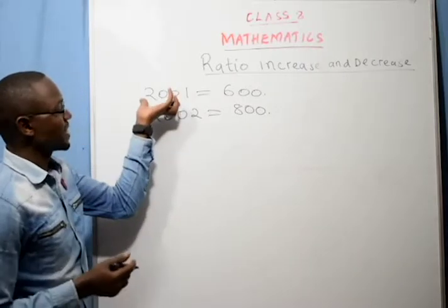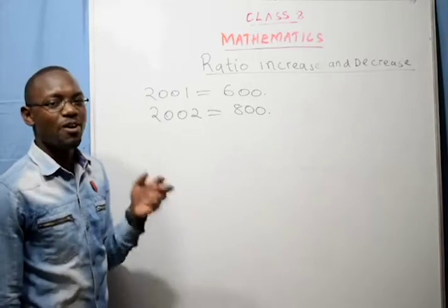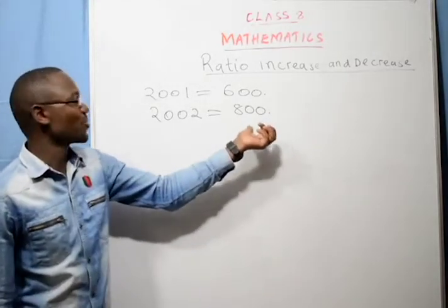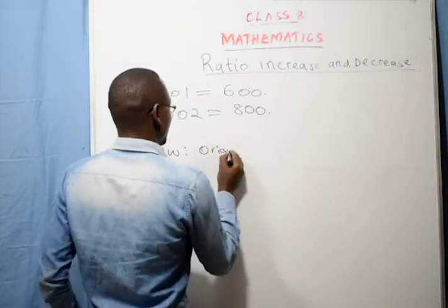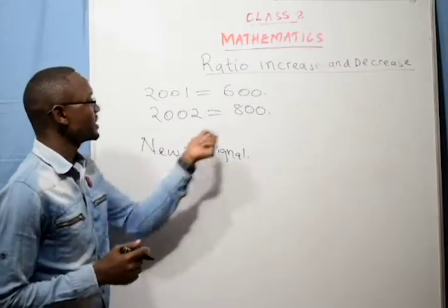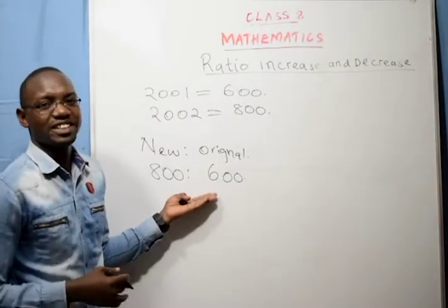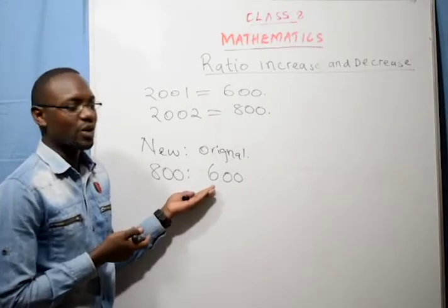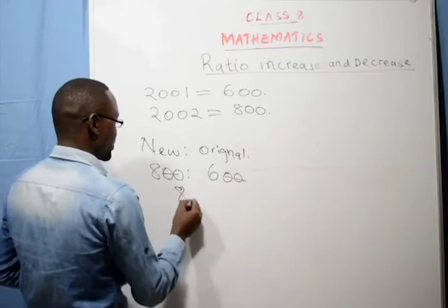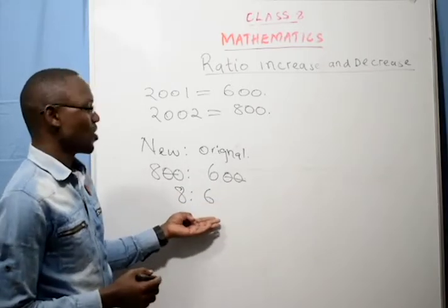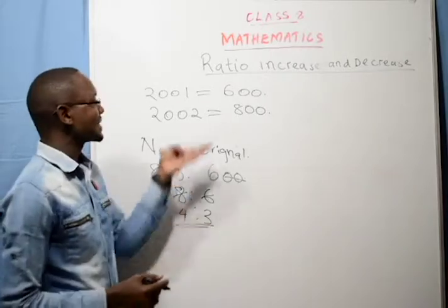The new quantity is 800, and we use the formula new is to original. New is 800, and the original was 600, giving us 800 is to 600. We simplify by 100, leaving us with 8 is to 6. We simplify further by 2: 4 is to 3. So the ratio increase is 4 is to 3. That is how simple these questions are.